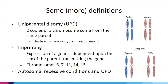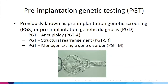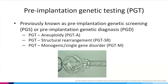Pre-implantation genetic testing, or PGT, was previously known as PGS or PGD. There are different types: PGT-A refers to aneuploidy — extra or missing chromosome material; PGT-SR is for structural rearrangements, an option for couples where one member has a chromosome rearrangement; and PGT-M is for monogenic or single gene disorders. Today we're focusing primarily on PGT-A.